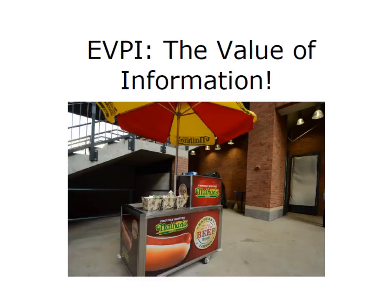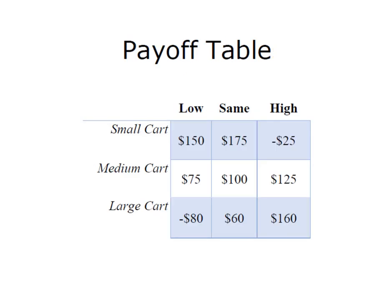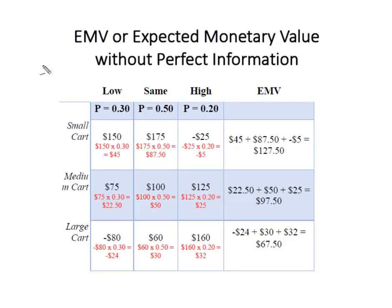So I want to know how much I'm willing to pay for perfect information regarding my hot dog cart decision. I have three alternatives: I can open a small, medium, or large hot dog cart on the Outer Banks. There are three states of nature possible — tourist traffic will either be lower, the same, or higher than last year. I've also been able to construct a payoff table that gives me my payoffs for each of my three decision alternatives under the three potential states of nature. I've calculated my expected monetary value without perfect information.